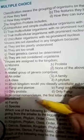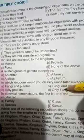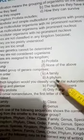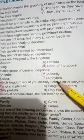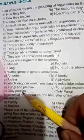In binomial nomenclature, the first letter of the genus name is capitalized.